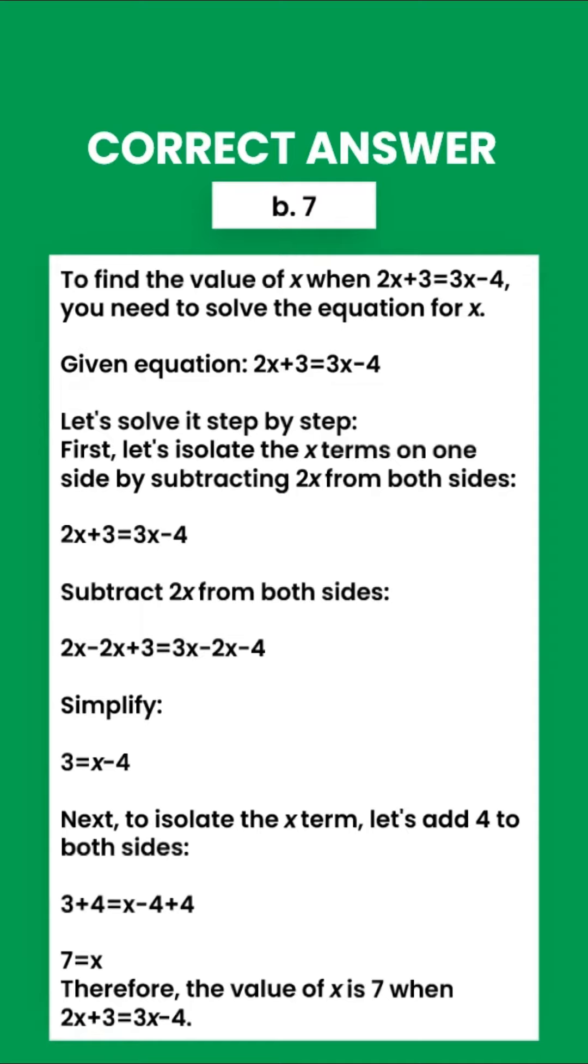Let's solve it step by step. First, let's isolate the x terms on one side by subtracting 2x from both sides. 2x plus 3 equals 3x minus 4. Subtract 2x from both sides.